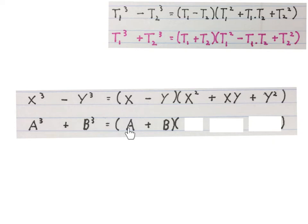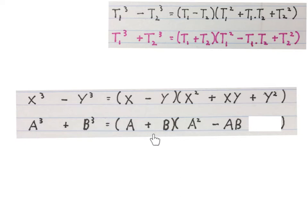You take this term, times it by itself, and write the answer there. Take this term times this term, which is plus AB — change the sign and write it there, which gives us minus AB. Then you take the rear term and times it by itself: plus B times plus B gives plus B squared. And then you have finished factorizing the sum of two cubes.